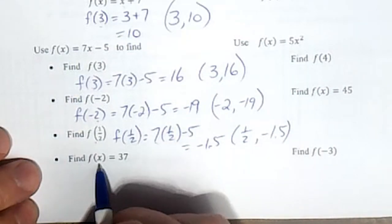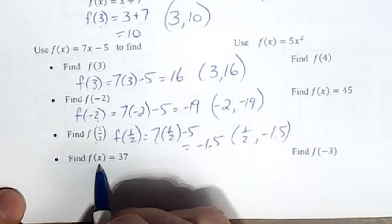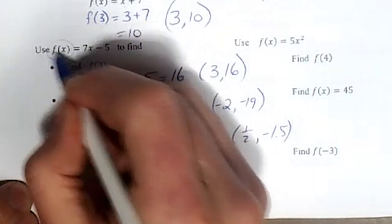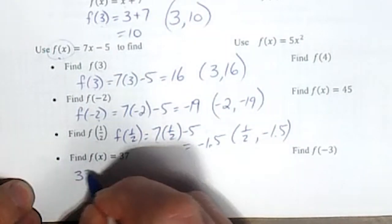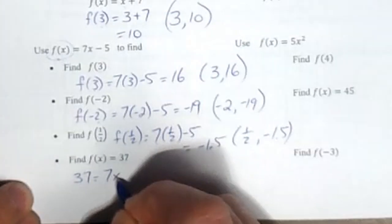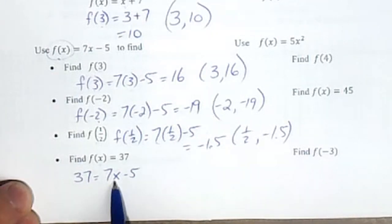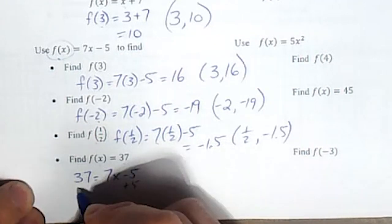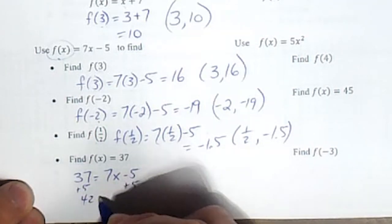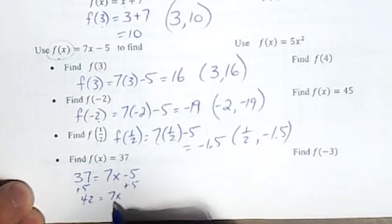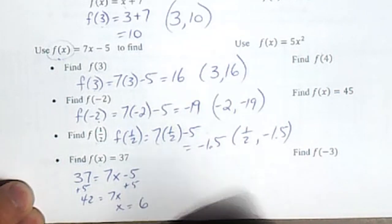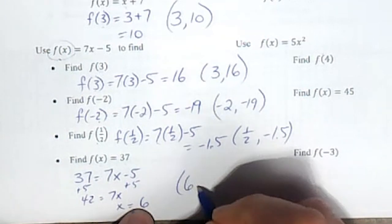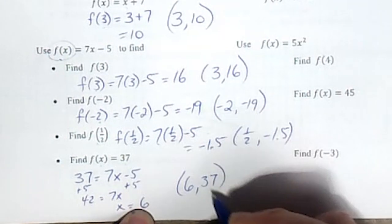And this one's different. This one we don't have an x, we have the answer. We have f of x. So we're going to take this 37 and replace f of x with 37. Because we don't have x, we have to use algebra to work backwards. 37 equals 7x minus 5, add 5 to both sides, we get 42, divide by 7 and we get our x value of 6. So when we do the ordered pair we start with the x, 6, finish with 37.